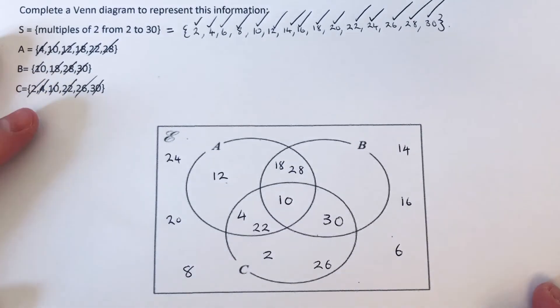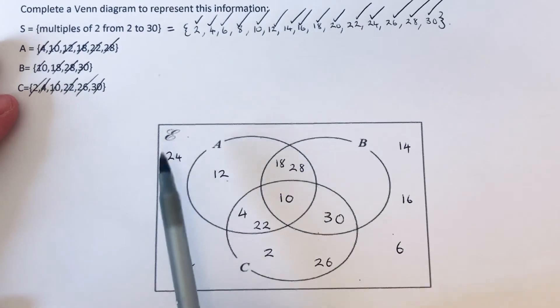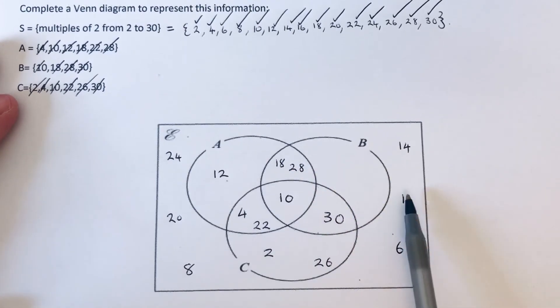So that's what I'm going to do. I'm just going to check that there's 15 numbers in our Venn diagram. So let's just count how many we've got: 1, 2, 3, 4, 5, 6, 7, 8, 9, 10, 11, 12, 13, 14, 15.